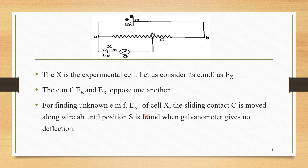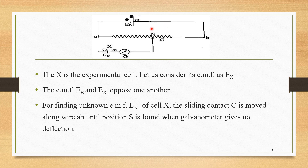For finding the unknown EMF EX of cell X, the sliding contact C is moved along wire AB until the position S is found — the point up to which this sliding contact C is moved continuously — when the galvanometer gives no deflection. S is such a point along wire AB where the galvanometer shows no deflection.